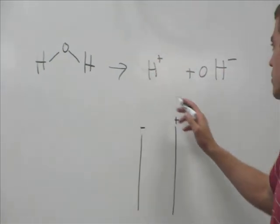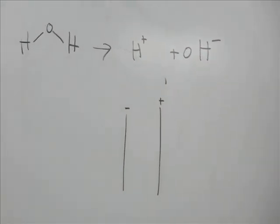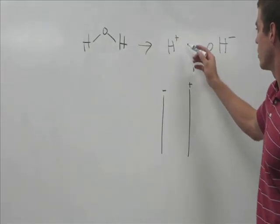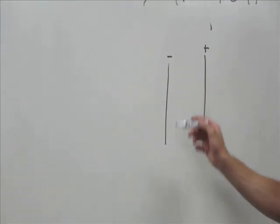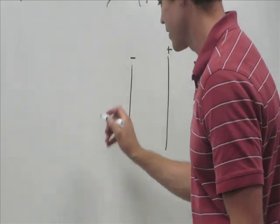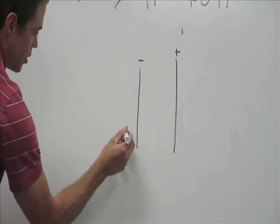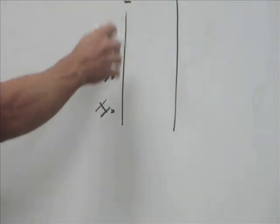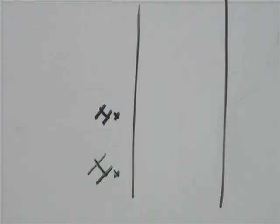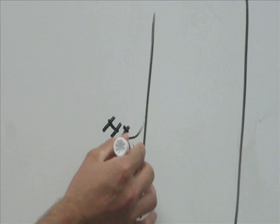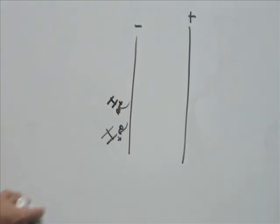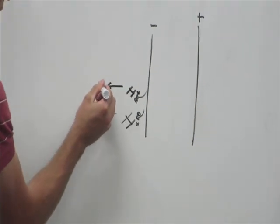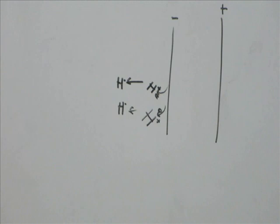We turn the power on and push to 9.5 or whatever setting. The protons are attracted to the negative cathode. Electrons coming off the cathode go into the water and combine with these protons. You make atomic hydrogen. These atoms form neutral atomic hydrogen — sometimes called 'active hydrogen.'